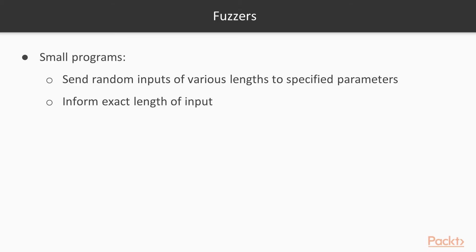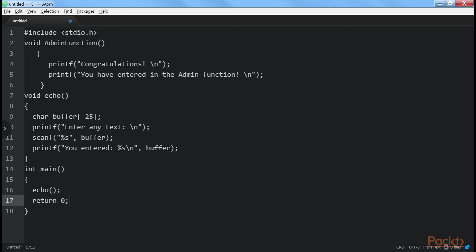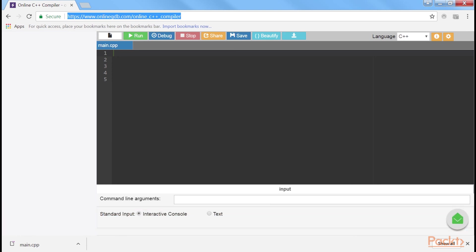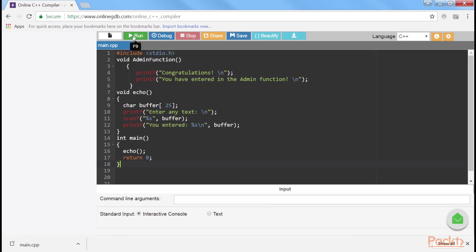So let's see what fuzzers are. Fuzzers are small programs that send random inputs of various lengths to specified parameters within the target application and inform us of the exact length of the input that caused the overflow and crash of the application. Let's check the code online — go to this site, copy your program here, and run it.